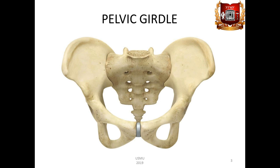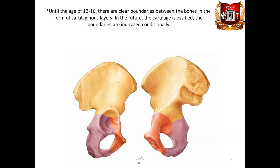The pelvic girdle is formed by two pelvic bones, which behind the back are almost motionlessly jointed with the sacrum and in front with each other. The pelvic bone os coxa in an adult consists of three knitted bones: iliac bone os ilium, sciatic bone os ischi, and pubic bone os pubis.